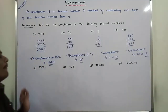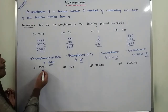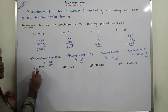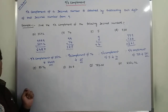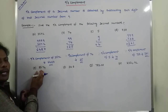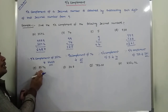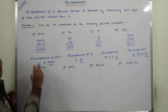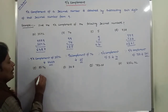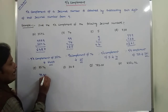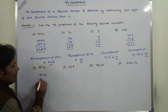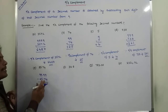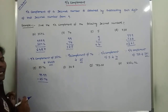Fifth problem. Find out the 9's complement of 25.74. Here a decimal point is there. Before the decimal point, there are 2 digits. After the decimal point, there are 2 digits. So 99.99 is subtracted from 25.74 — that is, 25.74 is subtracted from 99.99 — because there are 4 digits total and each digit is subtracted from 9, both before and after the decimal point.